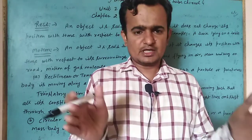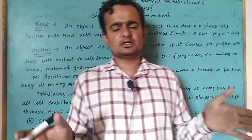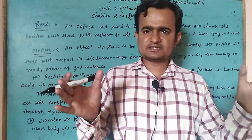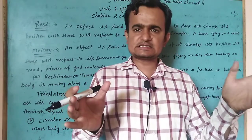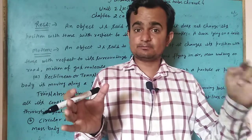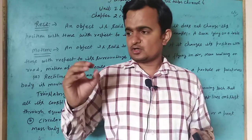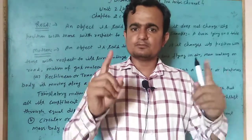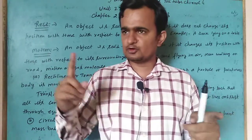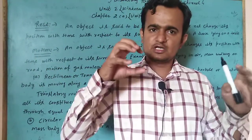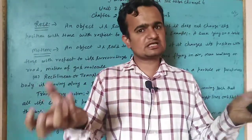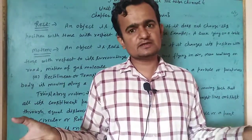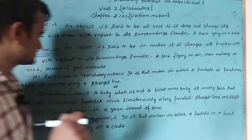Motion और rest में एक totally relative relation होता है। Example: a bus moving on the road — a passenger sitting inside the bus is at rest relative to other passengers, but a man standing on the road and looking at the bus sees it in motion. जो observer रोड पे खड़ा है उसे bus motion में दिखती है, लेकिन जो inside passengers एक दूसरे को देखते हैं, वो rest में नज़र आते हैं।